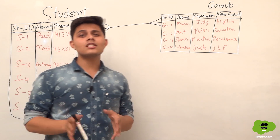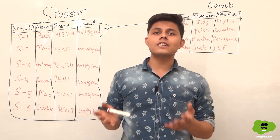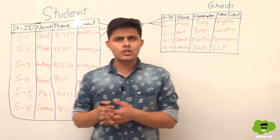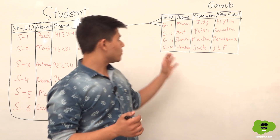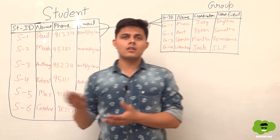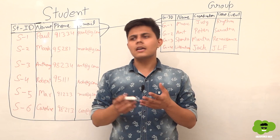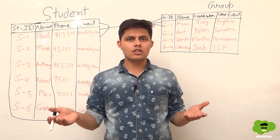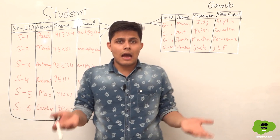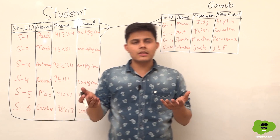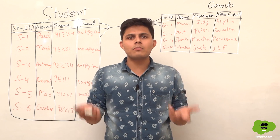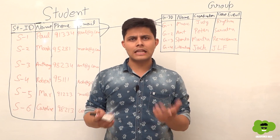The question arises: on which object do we need to create the foreign key or the relationship field, because both sides are many. Earlier, in previous videos, we understood that in a one-to-many relationship you need to create a relationship field on the many side. But what do we do in a many-to-many relationship where both sides are many?